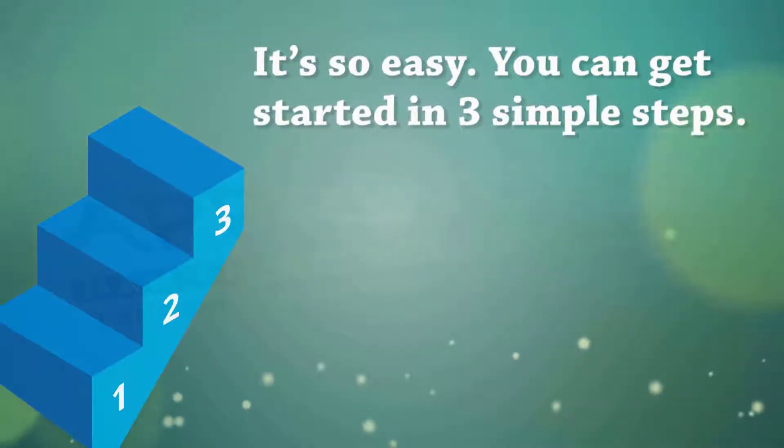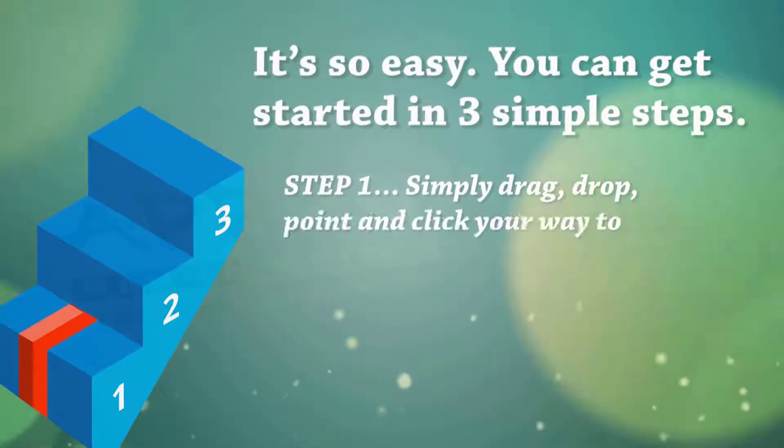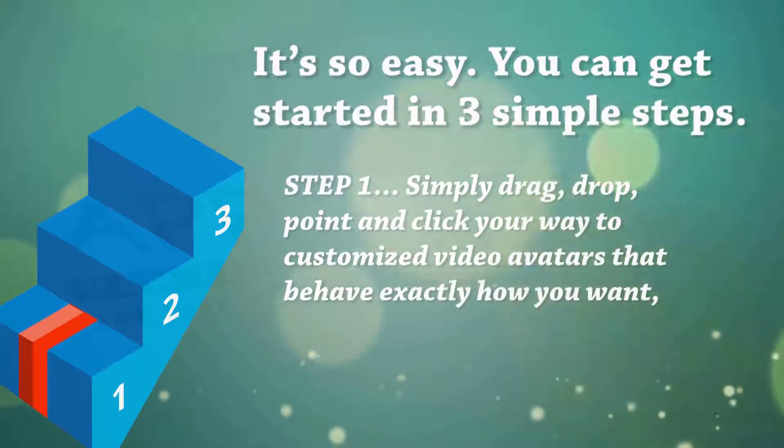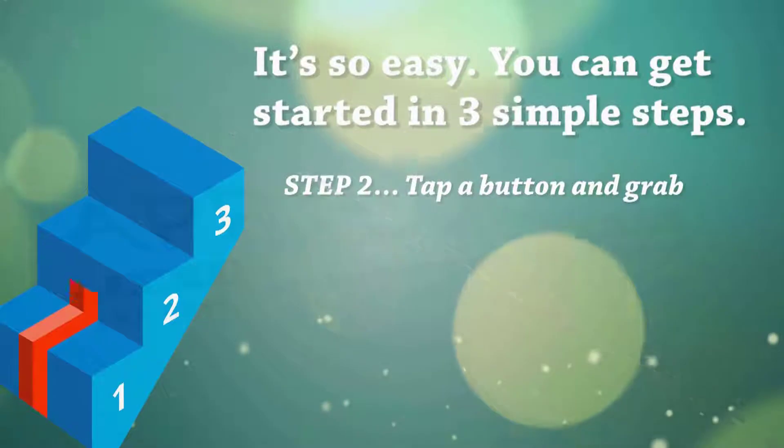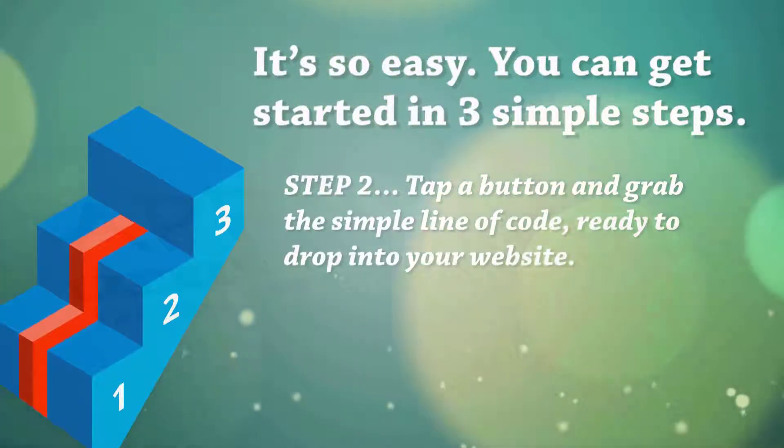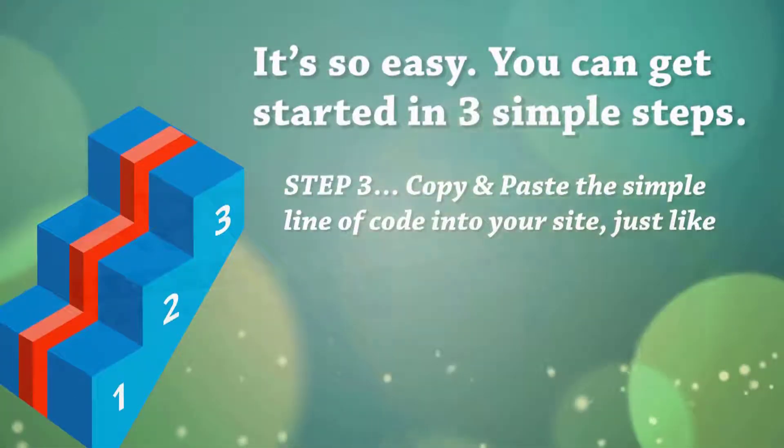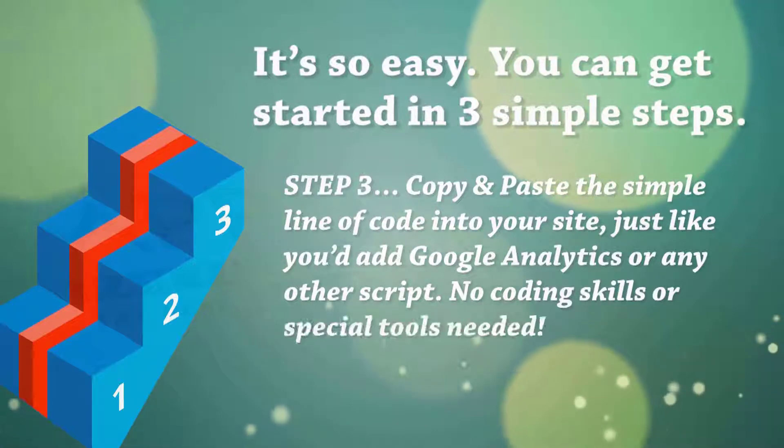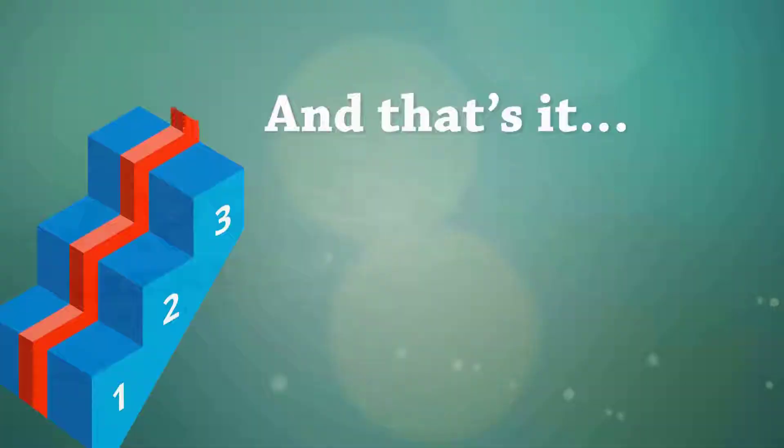It's so easy. You can get started in three simple steps. Step 1: Simply drag, drop, point, and click your way to customize video avatars that behave exactly how you want, when you want, where you want. Step 2: Tap a button and grab the simple line of code, ready to drop into your website. Step 3: Copy and paste the simple line of code into your site, just like you'd add Google Analytics or any other script, no coding skills or special tools needed. And that's it. You now have the most advanced avatar technology working for you.